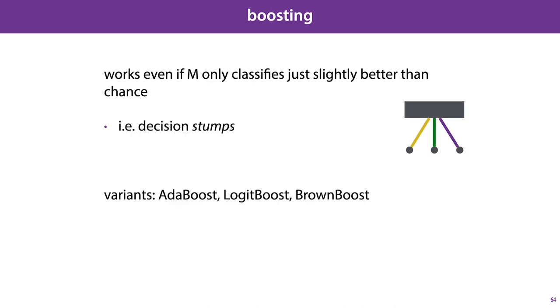So that's boosting. It works to reduce bias, even if M only classifies just slightly better than chance. For instance, if we have an ensemble of decision stumps, we can still make that a very effective classifier by the use of boosting. And we've shown AdaBoost in detail, but a variety of variants exist, including LogitBoost and BrownBoost.